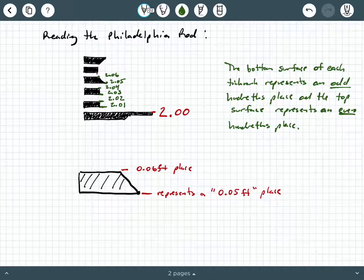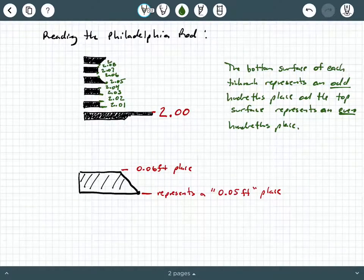Keep moving on up, this is 2.07, 2.08, 2.09, and then the top tip of the next trapezoid is a hundredths place increment, so 2.10.